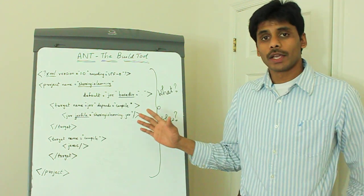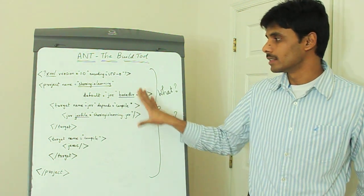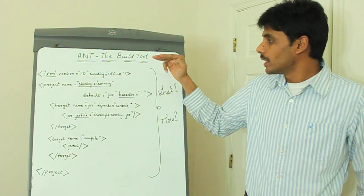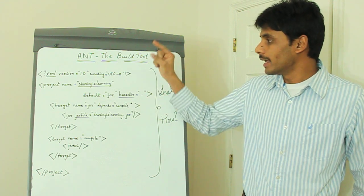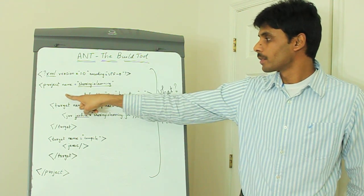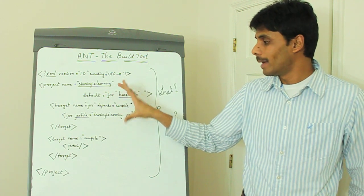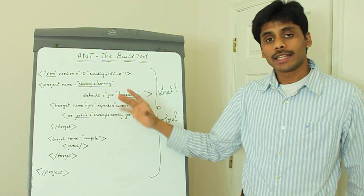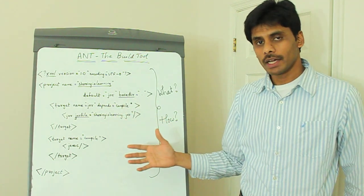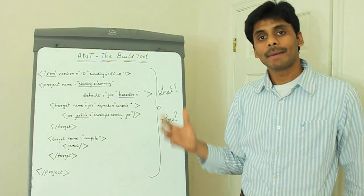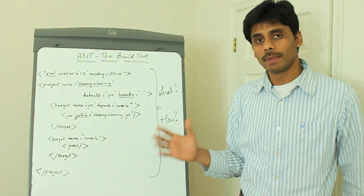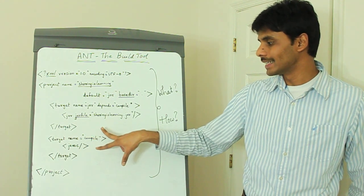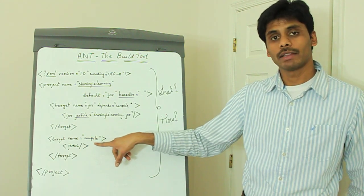Let's start by looking at a sample Ant XML - this is just the skeleton. The root element of an Ant XML file is project, and the project element has multiple target elements within it. The targets are nothing but logical units of work. For example, compiling your Java classes could be one target. So as you see here, compile is one target, and these targets in turn have Ant tasks inside them.